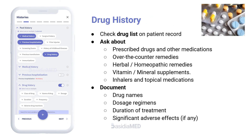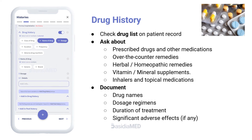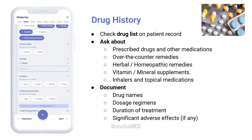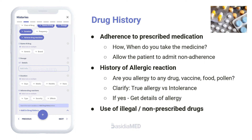Drug History: Begin by checking the drug list on the referral letter or patient record. Ask about prescribed drugs and other medications, including over-the-counter remedies, herbal and homeopathic remedies, and vitamin or mineral supplements. Do not forget to ask about inhalers and topical medications, as patients may assume you are asking only about tablets. Note all drug names, dosage regimens, and duration of treatment, along with any significant adverse effects.